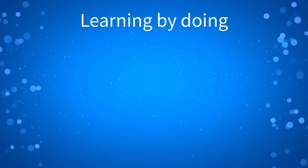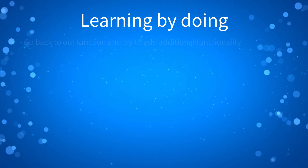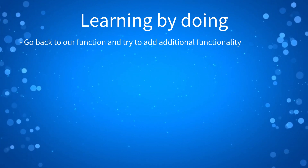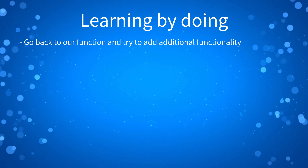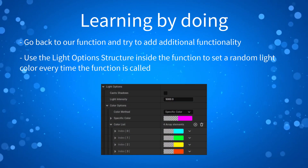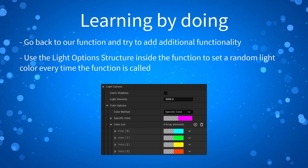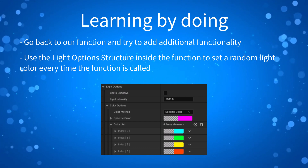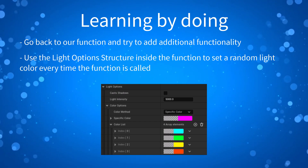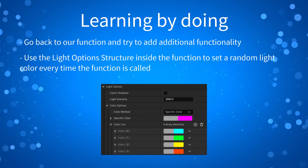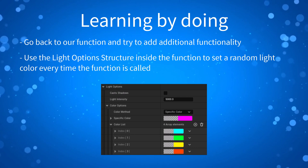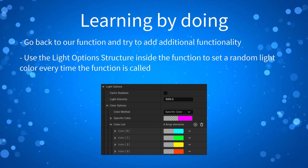If you want to practice what we learned, go back to our function and try to add additional functionality. Here's a challenge for you: use the light option structure inside the function to set a random light color every time the function is called. And that's all for this lesson. Thank you so much for watching, and I'll see you in the next one.